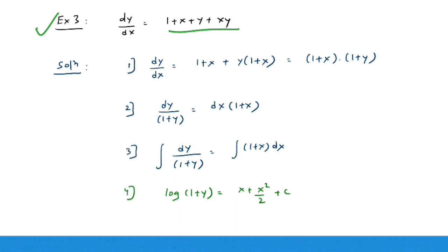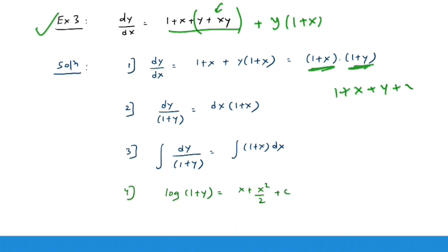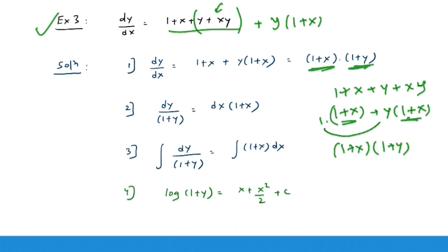It is not always necessary that the variables can be separated directly — that's why we have other types like exact, homogeneous, and linear differential equations. But here the variables can be separated. Take y common from the appropriate terms: 1 + x + y + xy = (1 + x) + y(1 + x) = (1 + x)(1 + y). So now you can separate the variables — (1 + x) is in terms of x and (1 + y) is in terms of y.